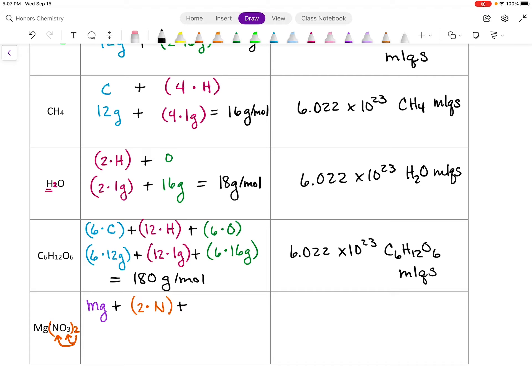So since there's a 3 for oxygen, we have to multiply the 2 times the 3. And that's going to give us 6. Let me color code that again. 6 times oxygen. So we're going to multiply or distribute that value of 2.